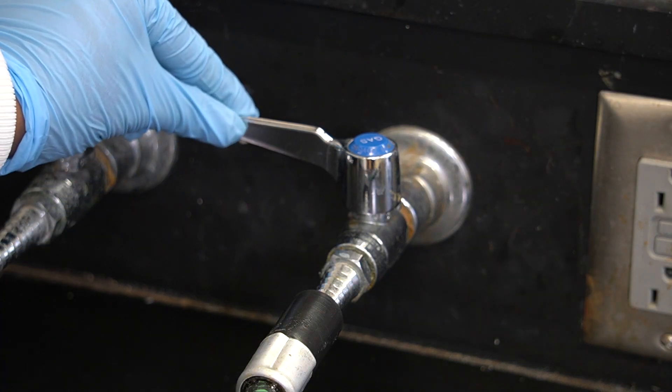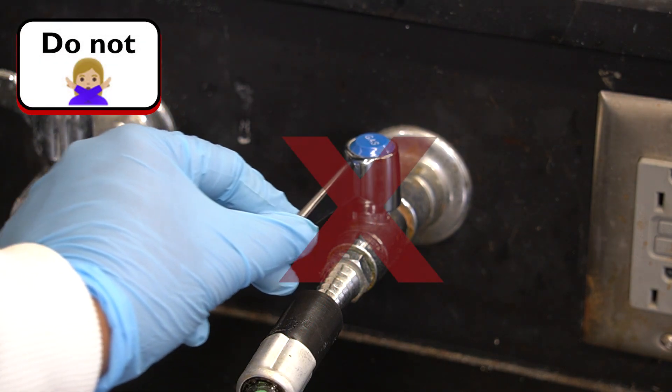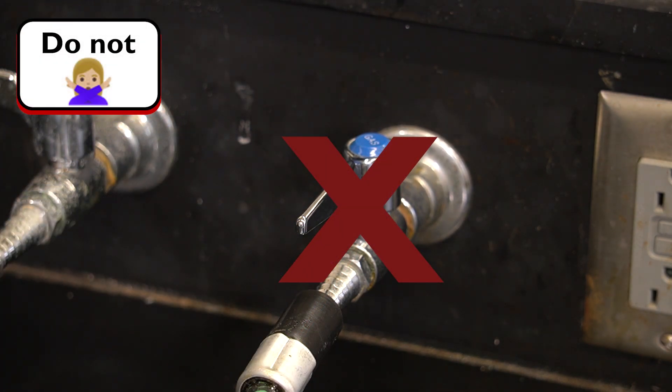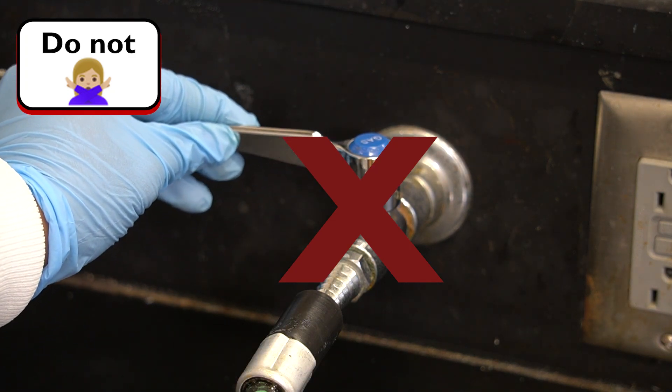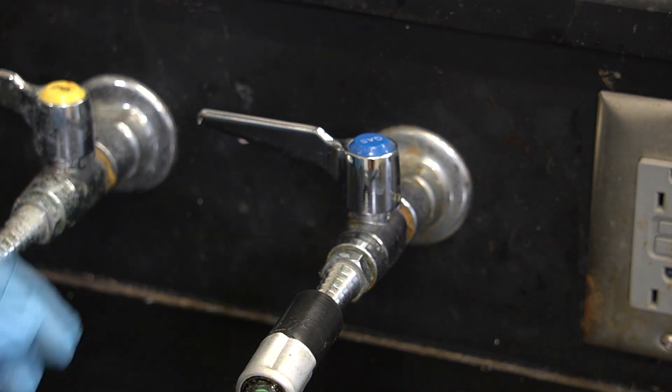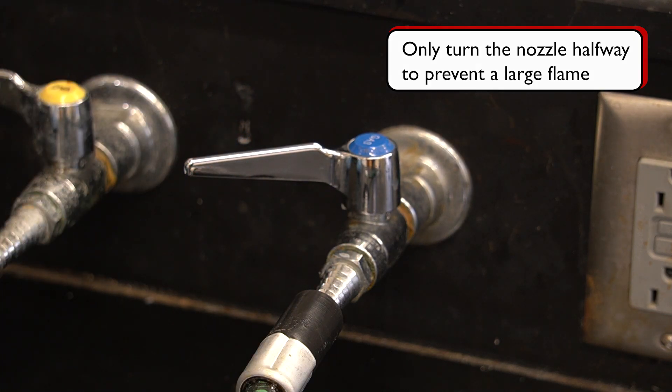Turn on the gas nozzle to allow natural gas into the burner. Do not turn it all the way on to the parallel position at once. This is to prevent producing a large flame upon striking, which might cause a fire hazard. Instead, we can turn the handle halfway at first and adjust the setting later once the flame is lit.